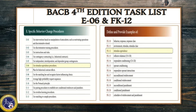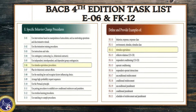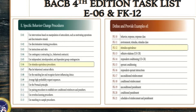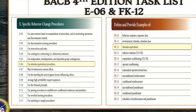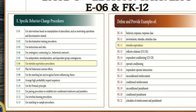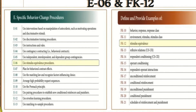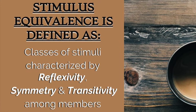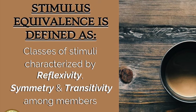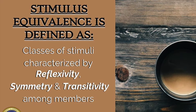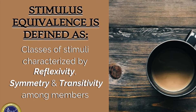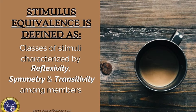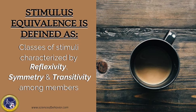The BACB task list references stimulus equivalence under section E06, use stimulus equivalence procedures, and FK-12, define and provide examples of stimulus equivalence. Stimulus equivalence is defined as classes of stimuli categorized by reflexivity, symmetry, and transitivity among members.